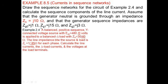Looking at example 2.5, the data was that we have some positive sequence Y-connected voltage source with EAB equal to 480 volts, applied to a balanced load of 30 at angle 40 ohms. Similarly, the line impedance between the source and the load is 1 at angle 85 degrees for each phase. We are going to calculate the line current, the load current, and the voltages, and here we are calculating the sequence component of the line current.